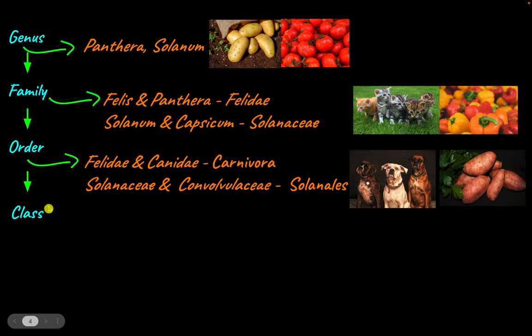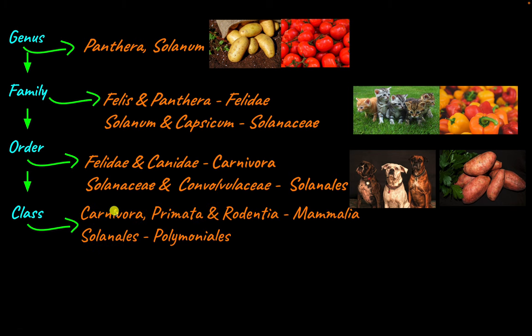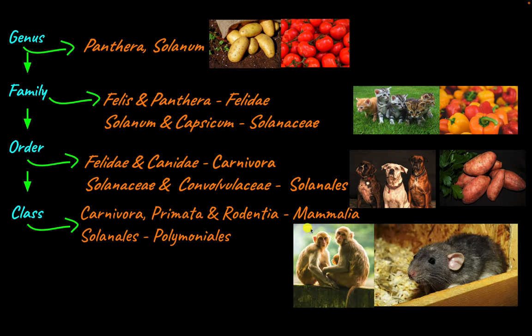After order comes class, which includes all closely related orders. Continuing with the example of Carnivora: the orders Carnivora, Primata, and Rodentia are all classified in the class Mammalia, which means they are all mammals — including humans, who belong to order Primata, and rats and squirrels which belong to order Rodentia. For plants, the order Solanales is classified under the class Polymonials.